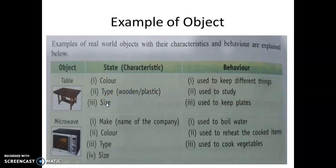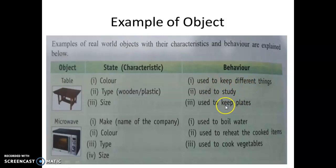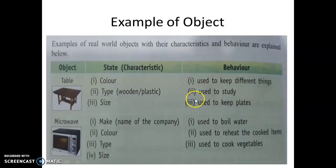Maybe it is a dining table or study table, so it depends on the size. So these are color, type, size, and company name — these are the characteristics of a table. Behaviour means its uses: a table is used to keep different things, used to study, used to keep things placed. So one object has some state, that means characteristic, and Behaviour, that means its uses.